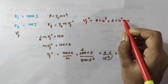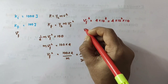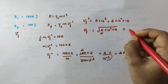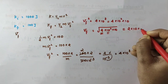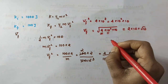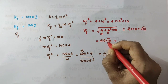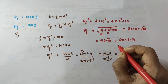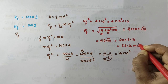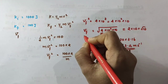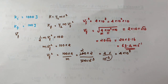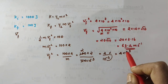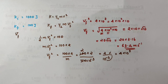So v_f² = 4 × 10³ = 4 × 10² × 10. Therefore v_f = √(4 × 10² × 10) = 2 × 10 × √10 = 20√10. Since √10 ≈ 3.16, we get v_f ≈ 63.2 meters per second. The final velocity of the bullet as it emerges from the plywood of thickness 2 centimeters is 63.2 m/s.